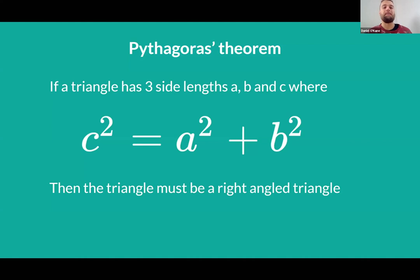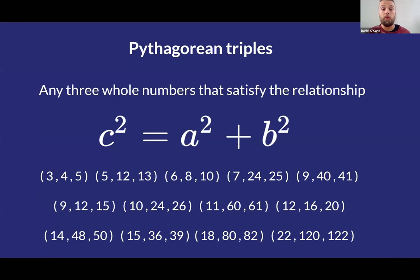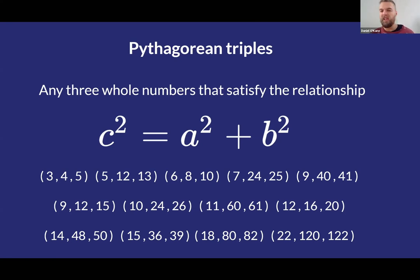We also looked at using Pythagoras' Theorem to prove that if a triangle has three side lengths that satisfy this relationship, then you can state the triangle must be a right angle triangle. We also looked at Pythagorean triples — any three whole numbers that satisfy C² = A² + B² is known as a Pythagorean triple. As a year 9 student, you really only need to memorize four unique Pythagorean triples. Any scalar multiple of a Pythagorean triple — as long as all three side lengths are multiplied by the same constant — will also be a Pythagorean triple.